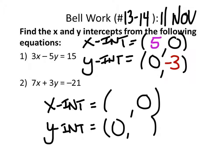Same with the next one. The X intercept is negative 21 divided by 7, which is negative 3. And the Y intercept is negative 7.